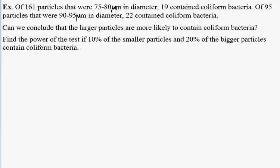This video concerns a two-sample test, but this time concerning two different proportions. For the first sample, 19 out of 161 are successes, meaning that they contain coliform bacteria. In the second sample, 22 out of 95 are successes.